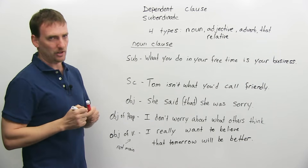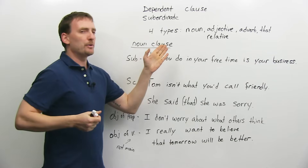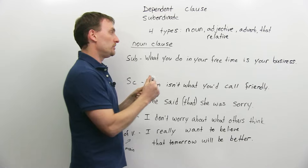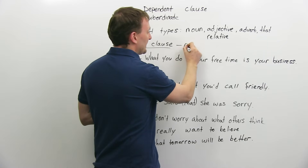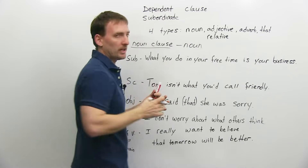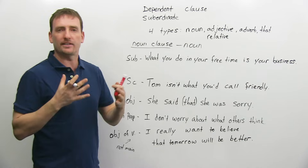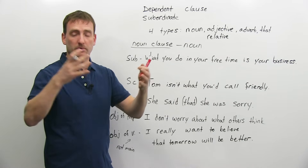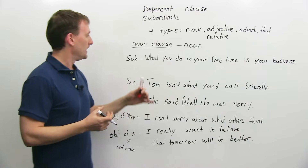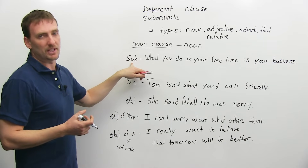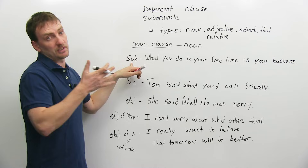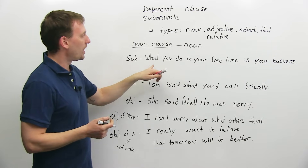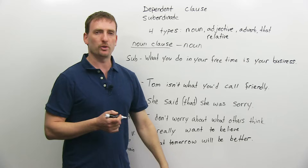What is a noun clause? A noun clause has a specific function in a sentence — it is used just like a noun. You think of a noun clause as you would a noun, except that it's a clause with a subject, a verb, and other pieces. We can use it as the subject of an otherwise independent clause. For example: 'What you do in your free time is your business.'